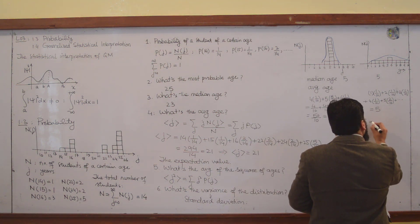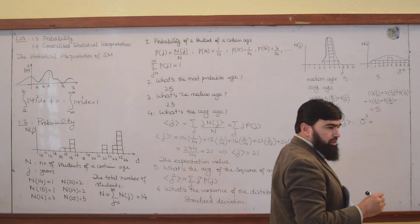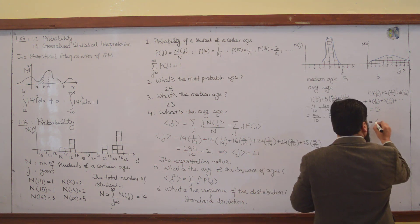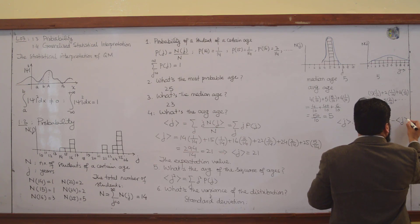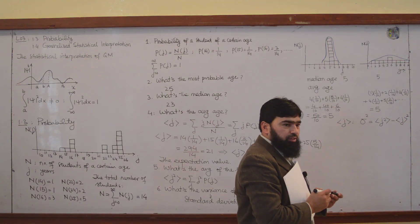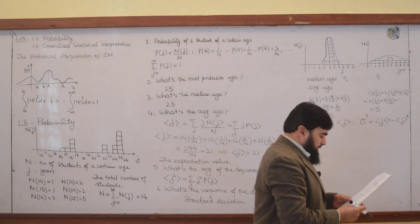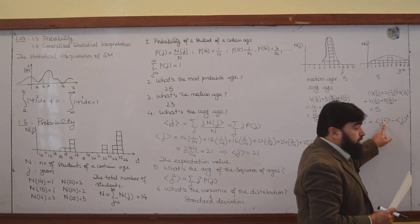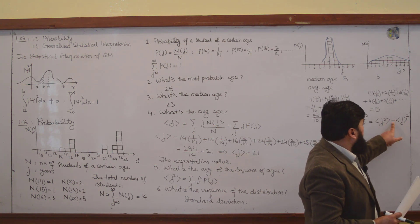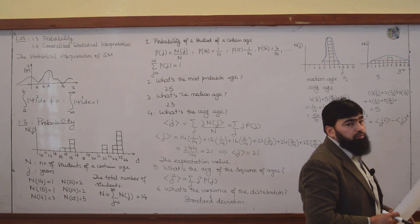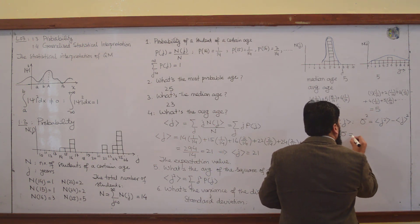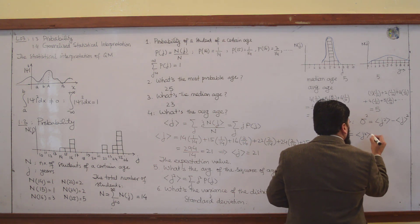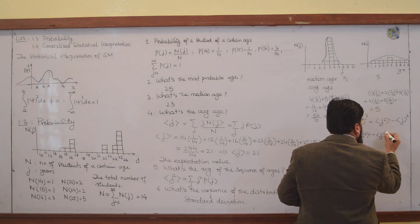Sigma squared will be equal to ⟨j²⟩ minus ⟨j⟩². There is a difference: you make the average of j squared and you subtract the square of the average j from it. So the standard deviation sigma equals the square root of ⟨j²⟩ minus ⟨j⟩².